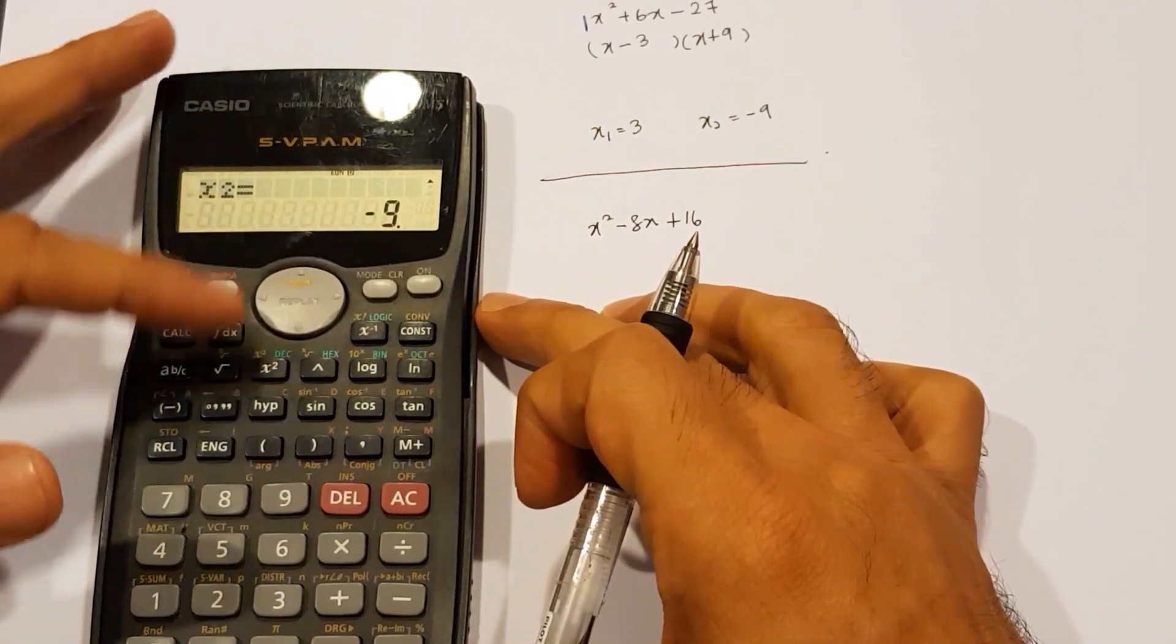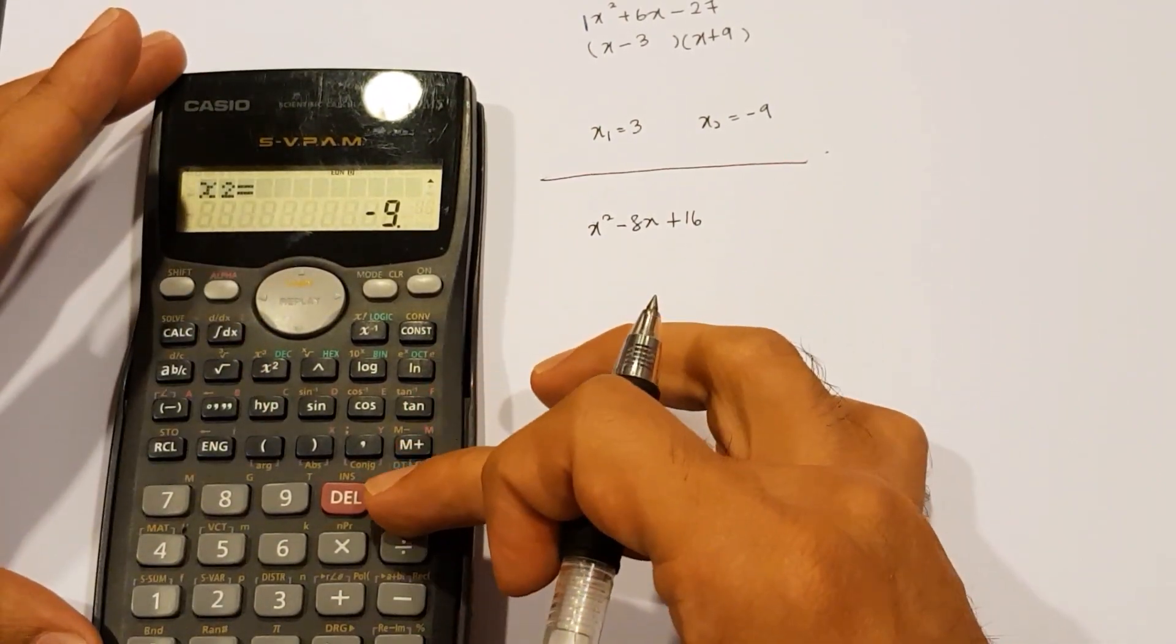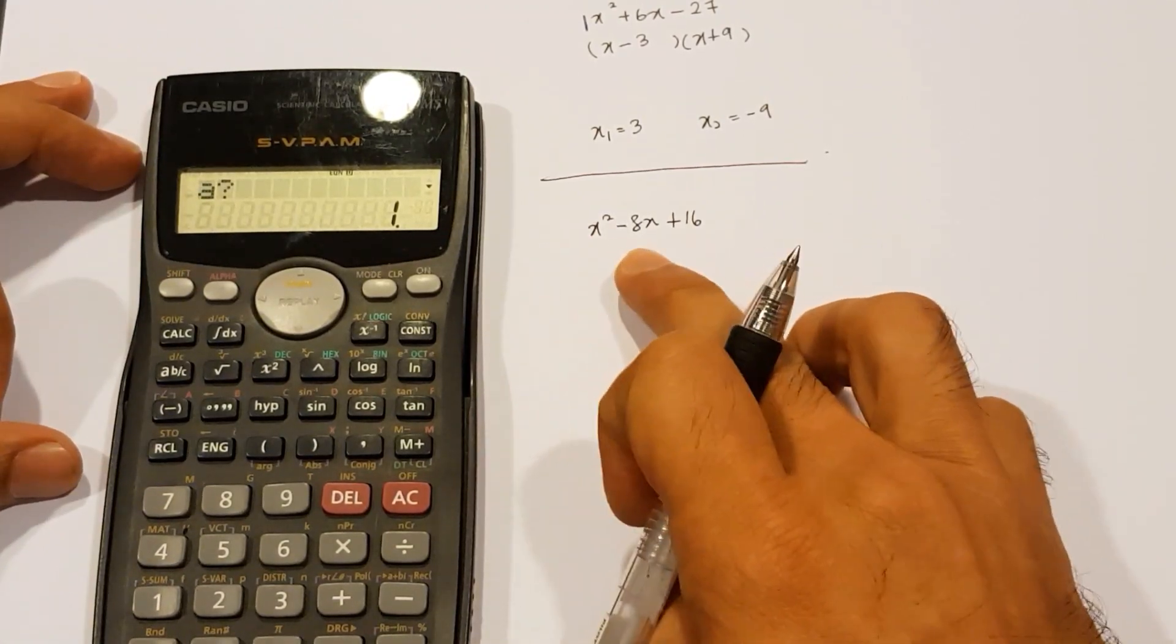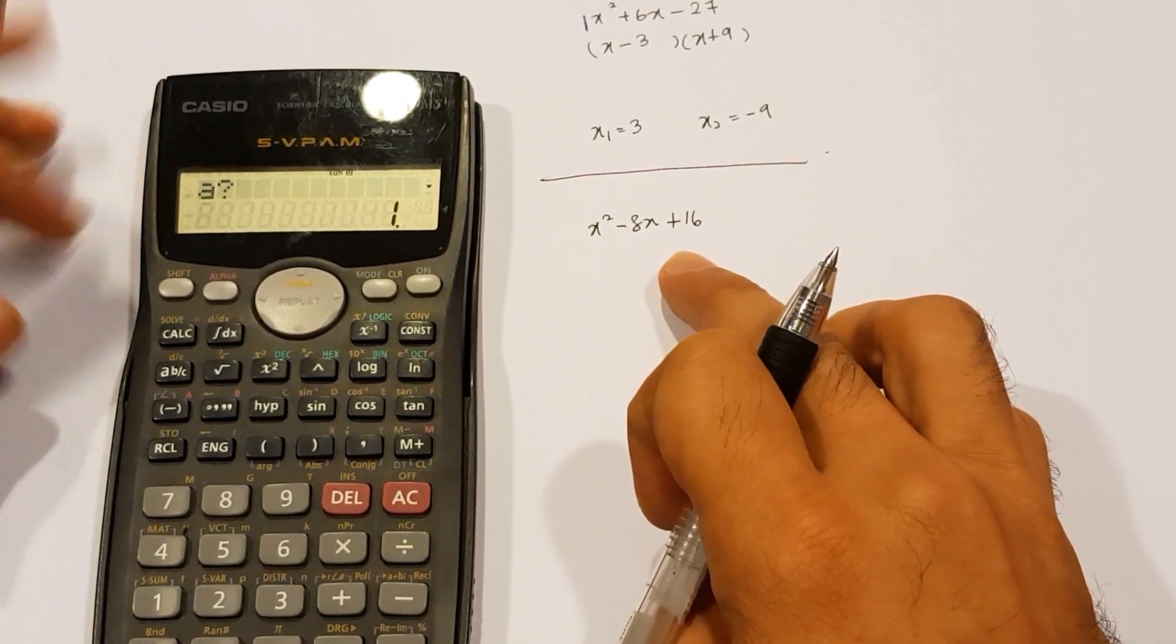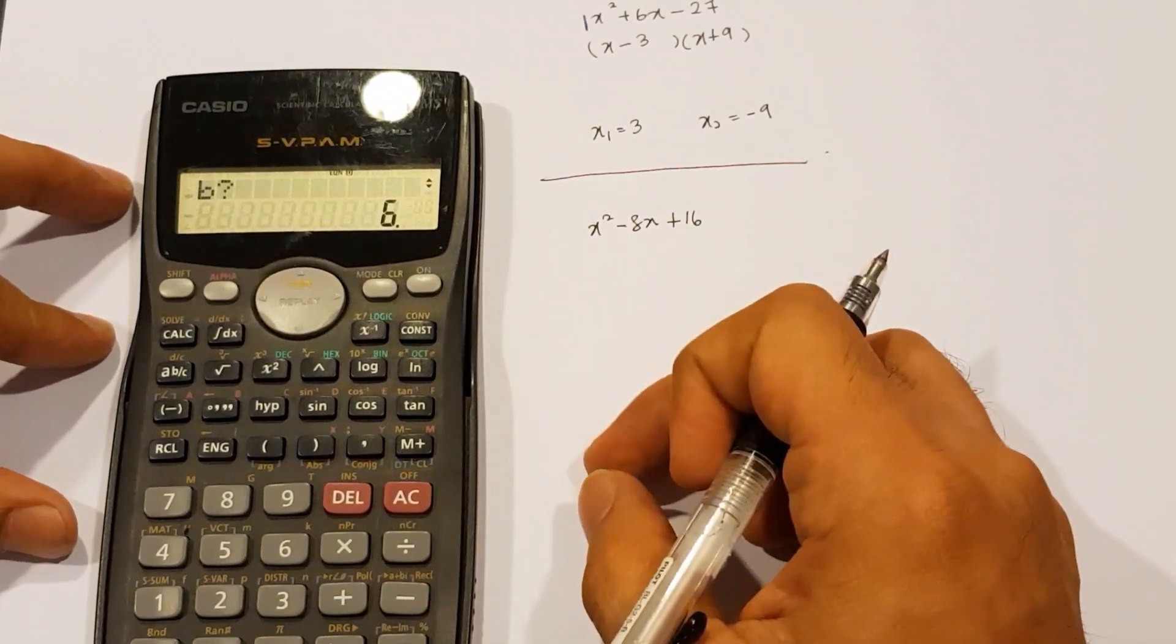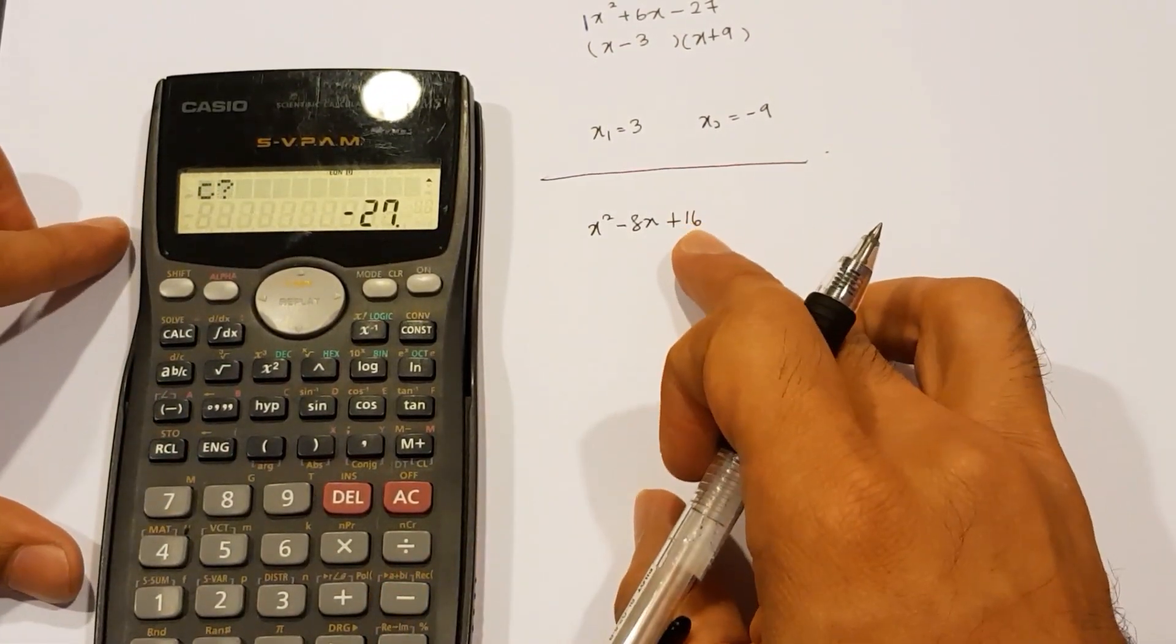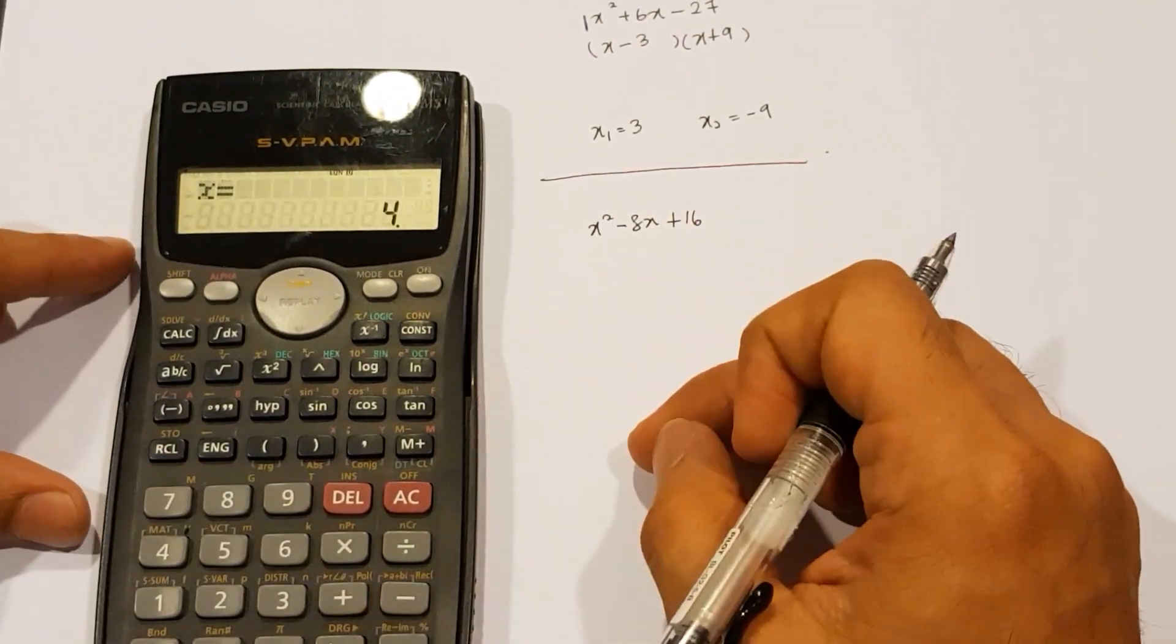I do not need to repeat the calculator steps again. I just press AC to go back to A. The A number here is 1, B number is negative 8, and C number is 16. I'm going to go ahead with 1 for A, press equal. B is negative 8, so negative 8, and then equal. C number here is 16, so 1, 6, and equal.